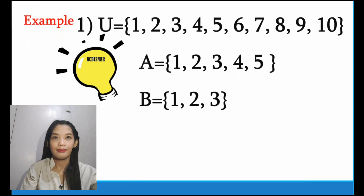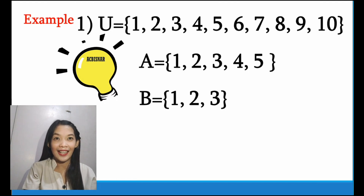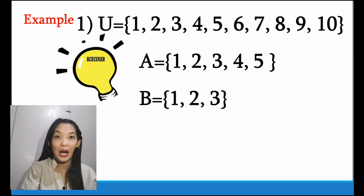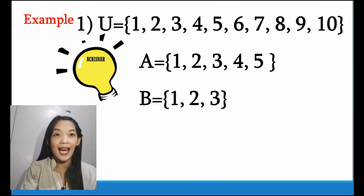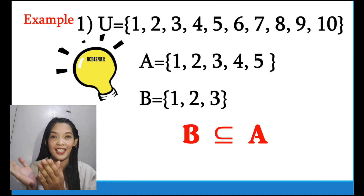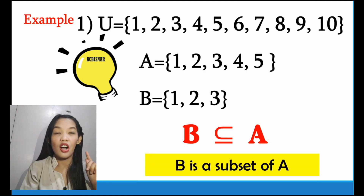Now let us relate that in math. In example 1, our universal set has the elements 1, 2, 3, 4, 5, 6, 7, 8, 9, and 10. Set A has the elements 1, 2, 3, 4, and 5. And set B has the elements 1, 2, and 3. Observe that every element in B can also be found in A — 1, 2, and 3 are also in A. Therefore, we can say that B is a subset of A, which is read as B is a subset of A.